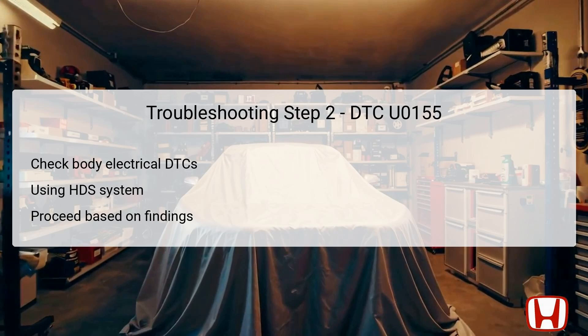The next step involves checking for any body electrical system DTCs using the Honda Diagnostic System (HDS). This ensures a comprehensive examination of all potential electrical issues that might influence the F-CAN system. Specifically look for DTCs B1168, B1169, and B1178, which pertain to body control architecture. If any of these codes are indicated, that suggests a deeper electrical issue needing attention prior to diagnosing the F-CAN malfunction. If none are shown, proceed to the gauge control module input test. Accurate diagnosis of body electrical issues is critical for resolving the U0155 problem.